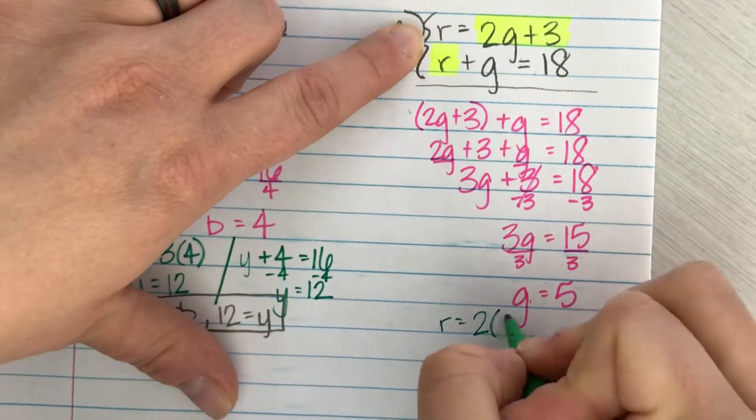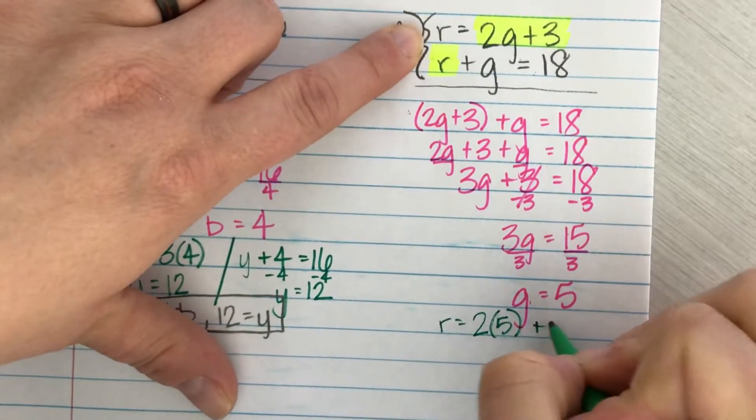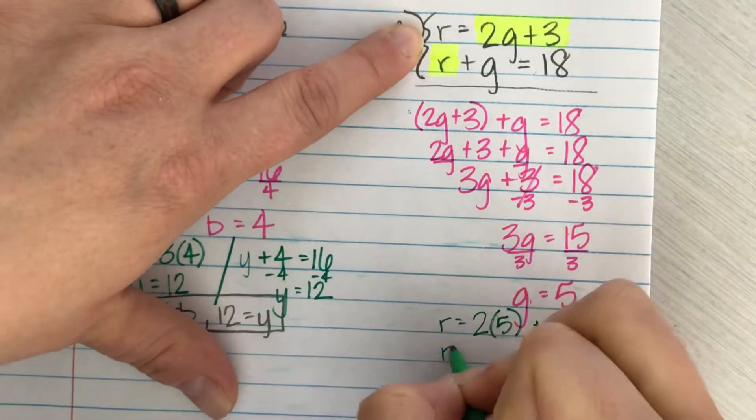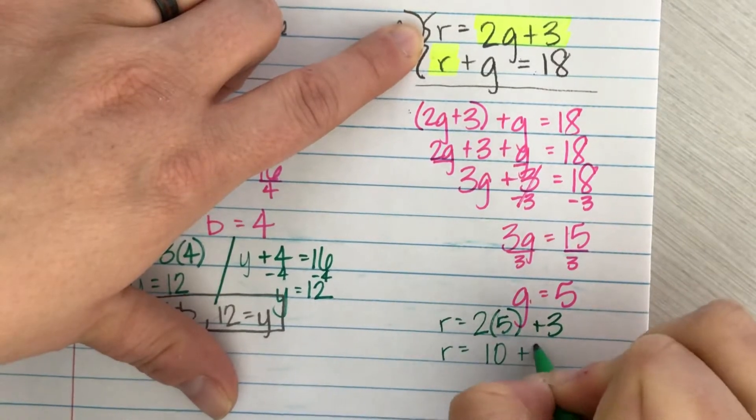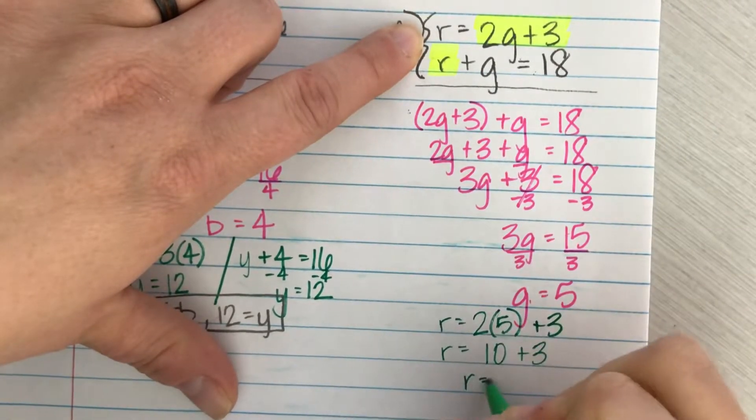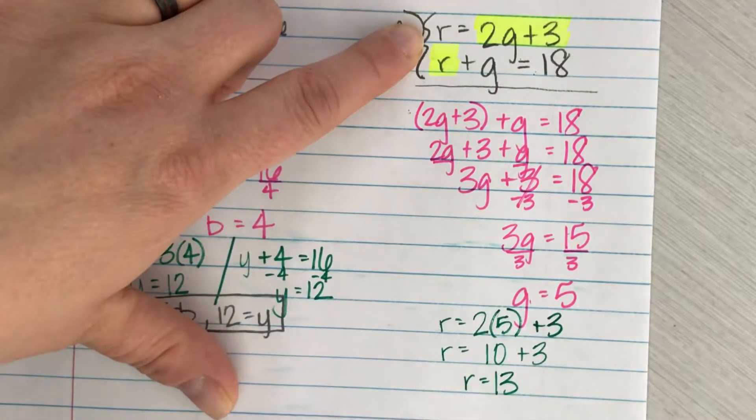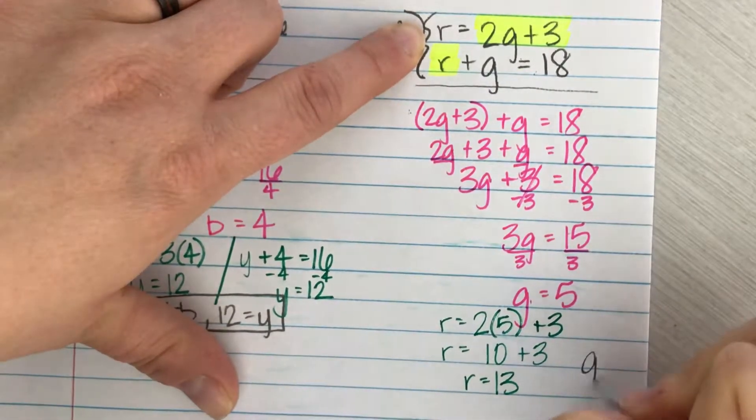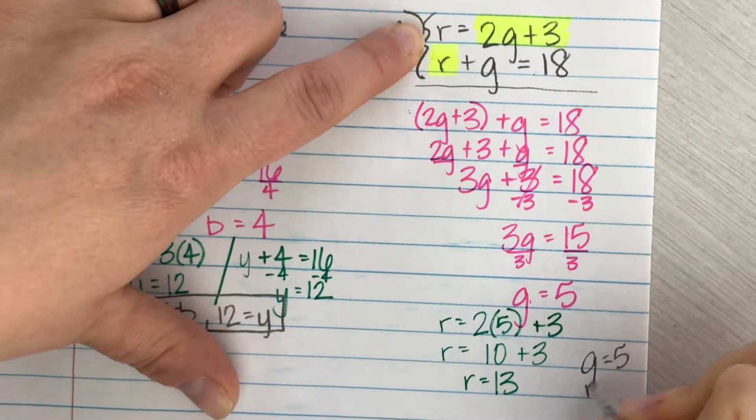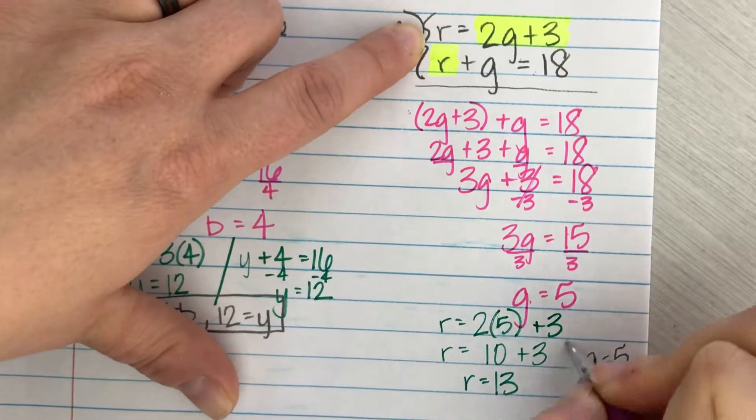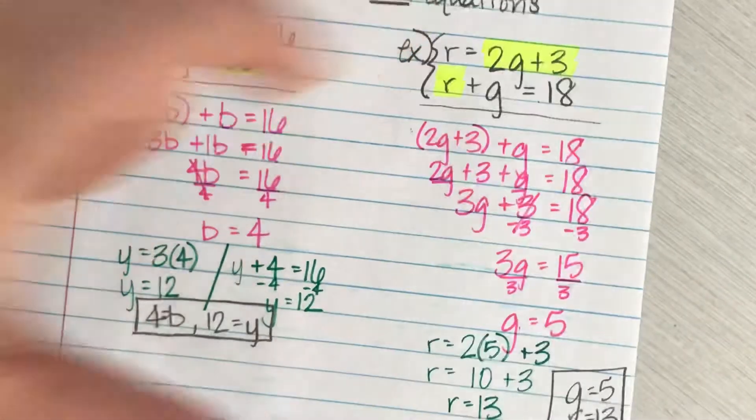Plus three. So r equals 10 plus three. R has to equal 13. So my answer would be both parts. G equals five. R equals 13.